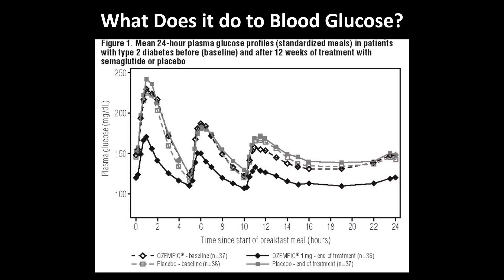So how does semaglutide actually affect glucose? This data is actually directly from the package insert. You can see that after each meal at 0, 5, and then 10 hours, blood glucose does rise in all these different testing situations. The baseline for Ozempic is prior to any doses, so it looks just like placebo. All you're seeing here is that placebo is the same as Ozempic at baseline because these patients haven't had Ozempic yet — that's why they look the same on the curves.